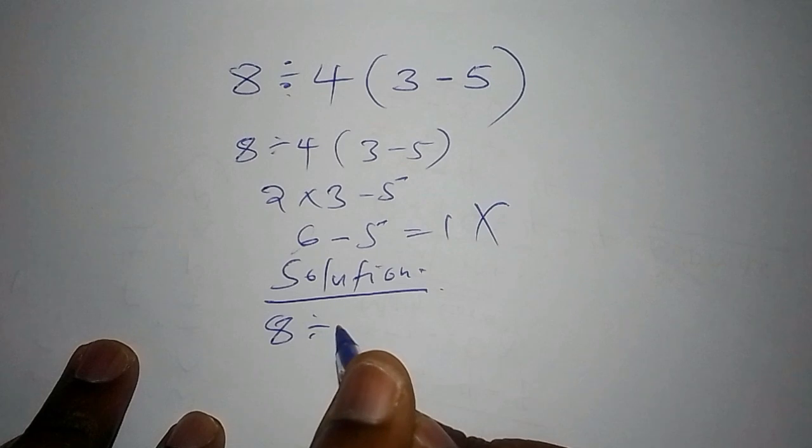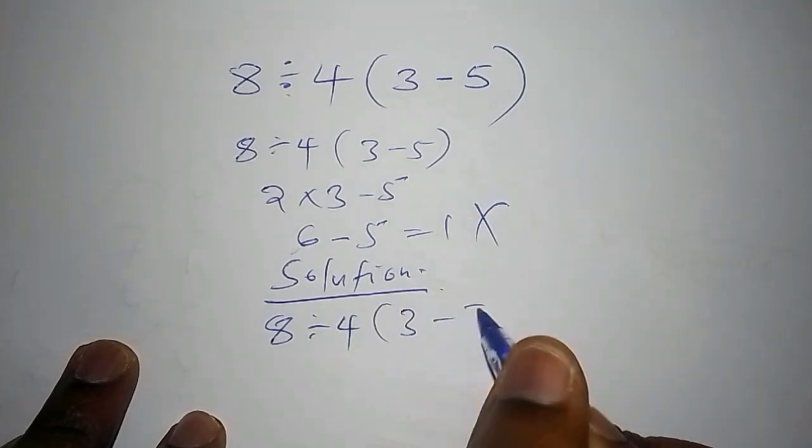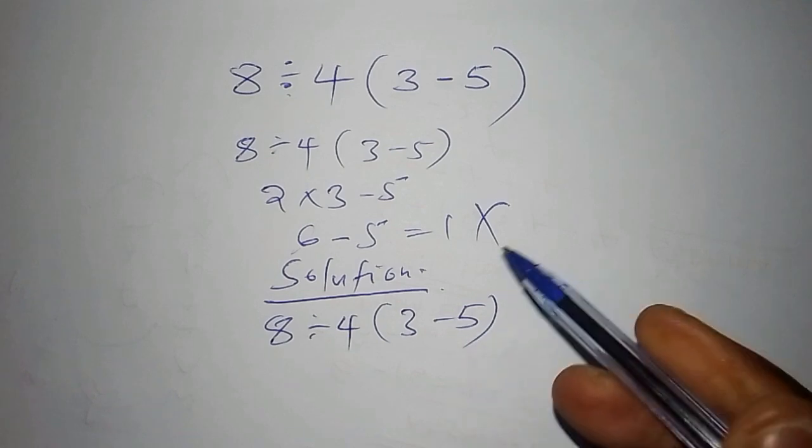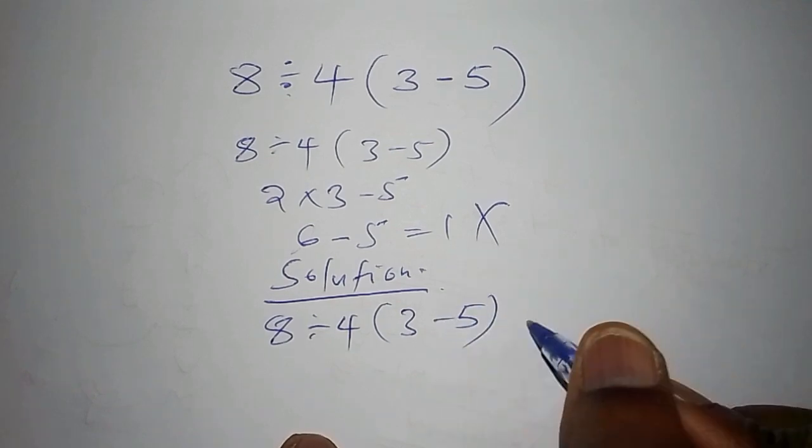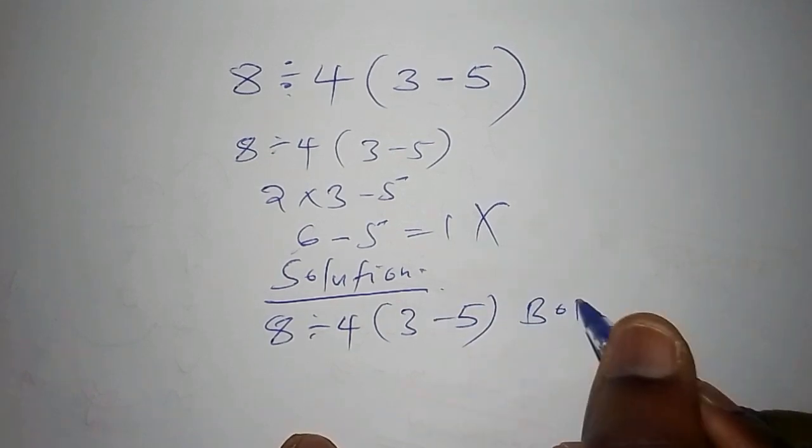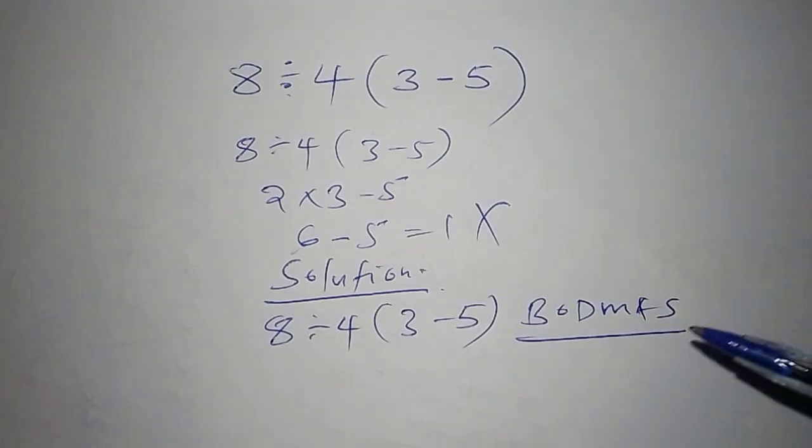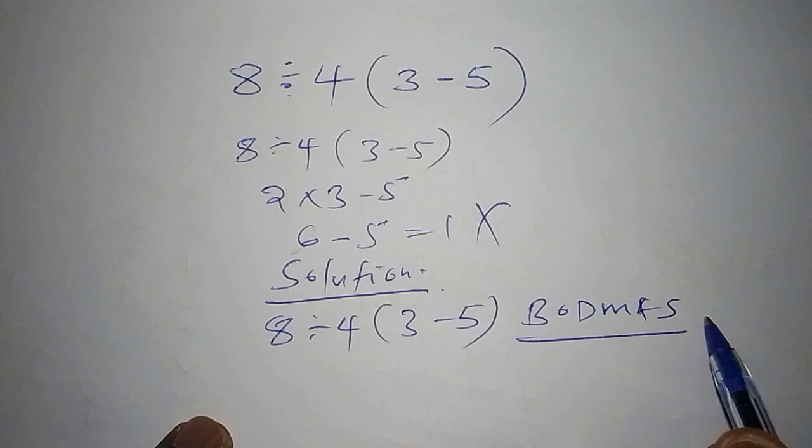We have 8 divide by 4 into bracket 3 subtract from 5. To follow this math problem, you need to follow the order of operations, which is called the BODMAS. You have to check the order in which you're working it out.